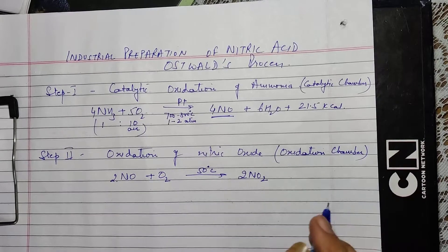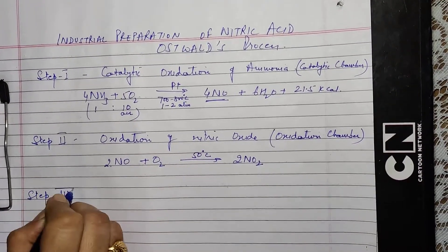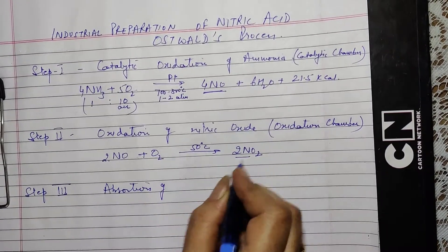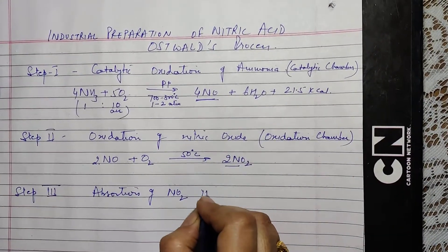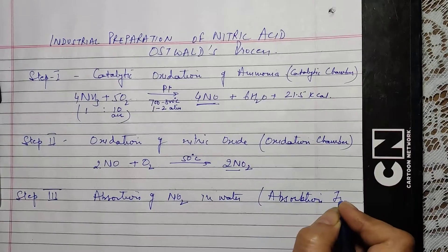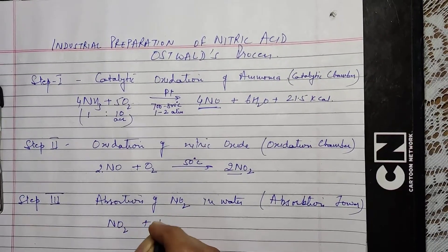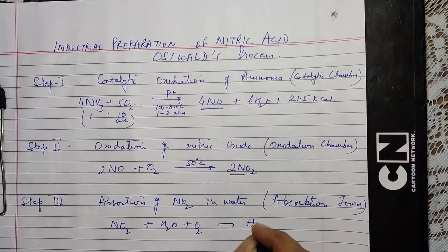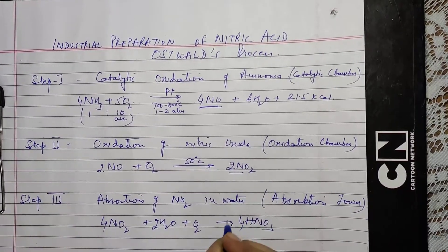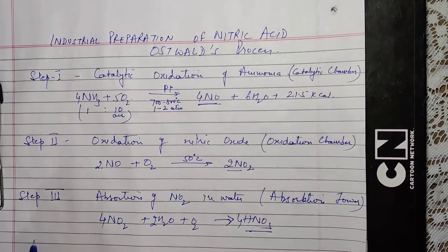This second process takes place in a chamber known as the oxidation chamber. Step 3 is the absorption of nitrogen dioxide. This nitrogen dioxide combines with water and some more oxygen in a chamber known as the absorption tower. NO2, water, and unused oxygen combine together to form HNO3 — nitric acid.